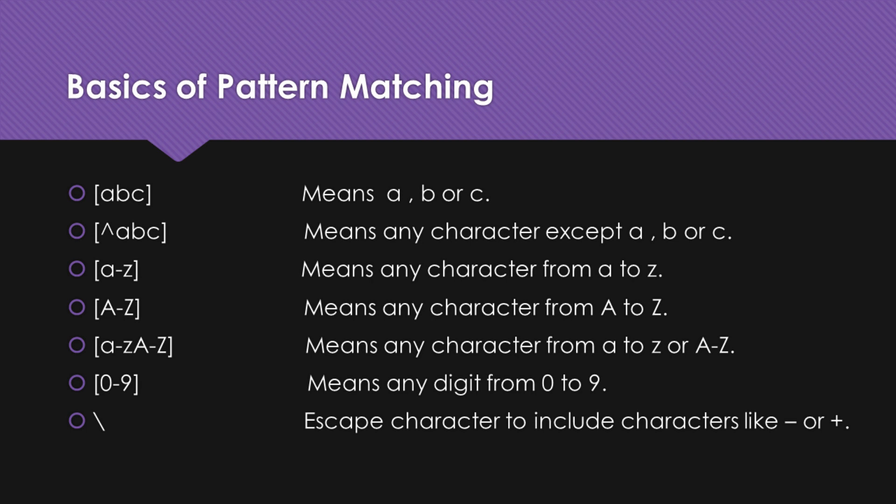Conversely, when we use the caret symbol within the square brackets, as in [^ABC], it means we want to match any character that is not A, B, or C. This is a powerful way to exclude specific characters from a match.